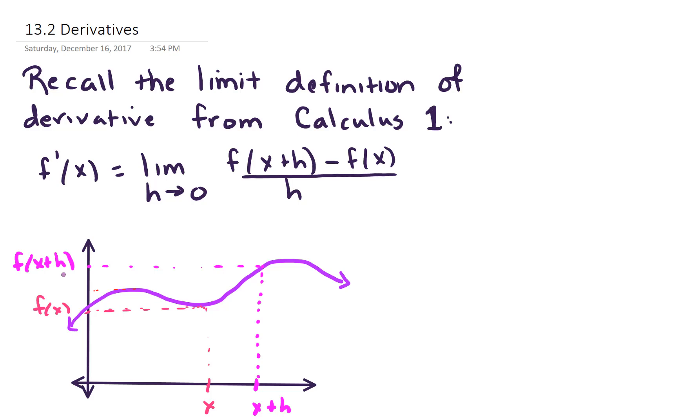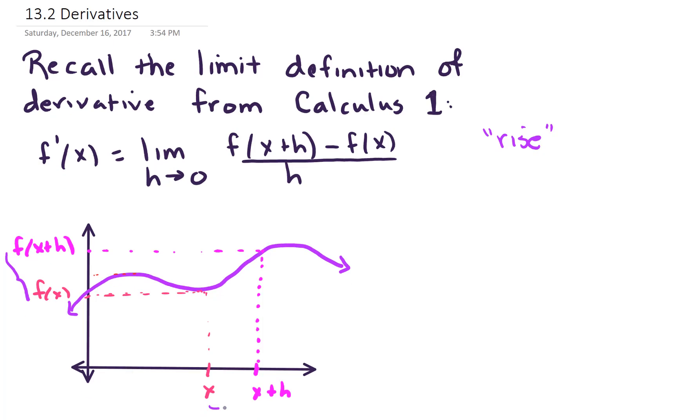And so this difference quotient, f of x plus h minus f of x, that's really a change in the y direction, or it's the rise. So this is like rise over, that's our rise, over run. And so our difference in the x direction is h.